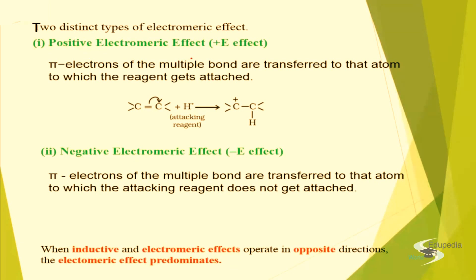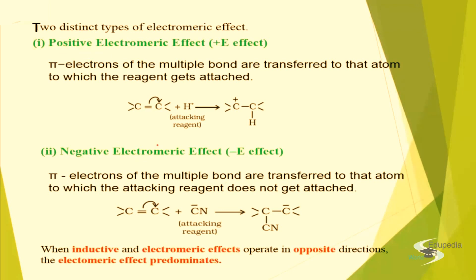We will also distinguish the electronic effect as plus E effect or minus E effect. Plus E effect, or positive electronic effect, is when pi electrons are transferred to the atom to which the reagent gets attached. Minus E will be just the opposite — the electrons shift away from the carbon atom on which the attacking reagent is attacking, that is, towards the atom on which the attacking reagent is not getting attached.